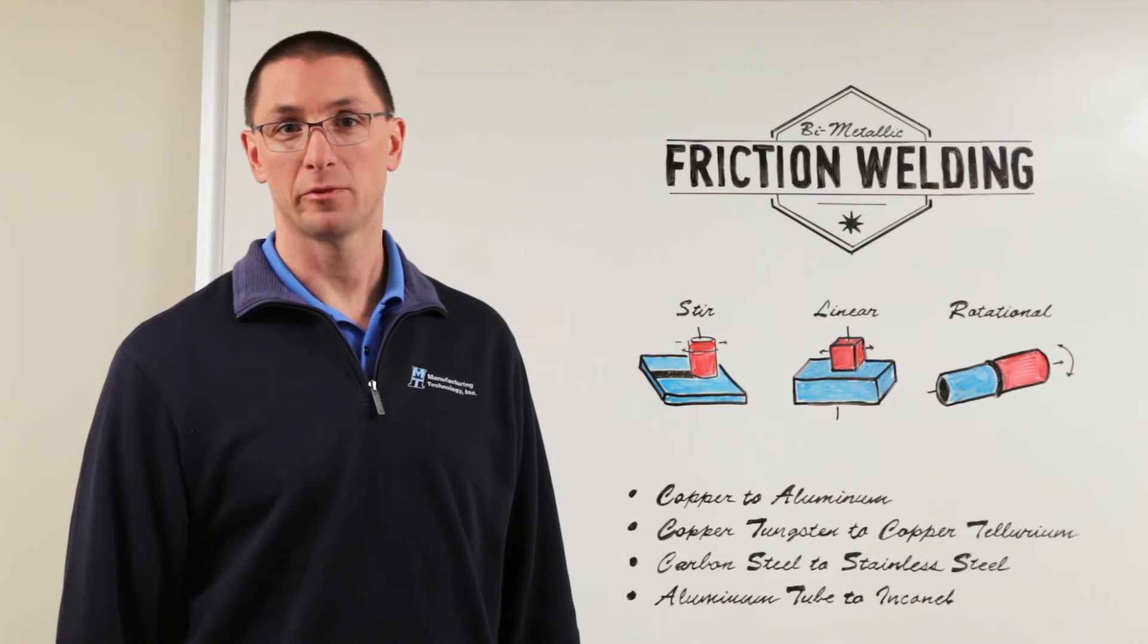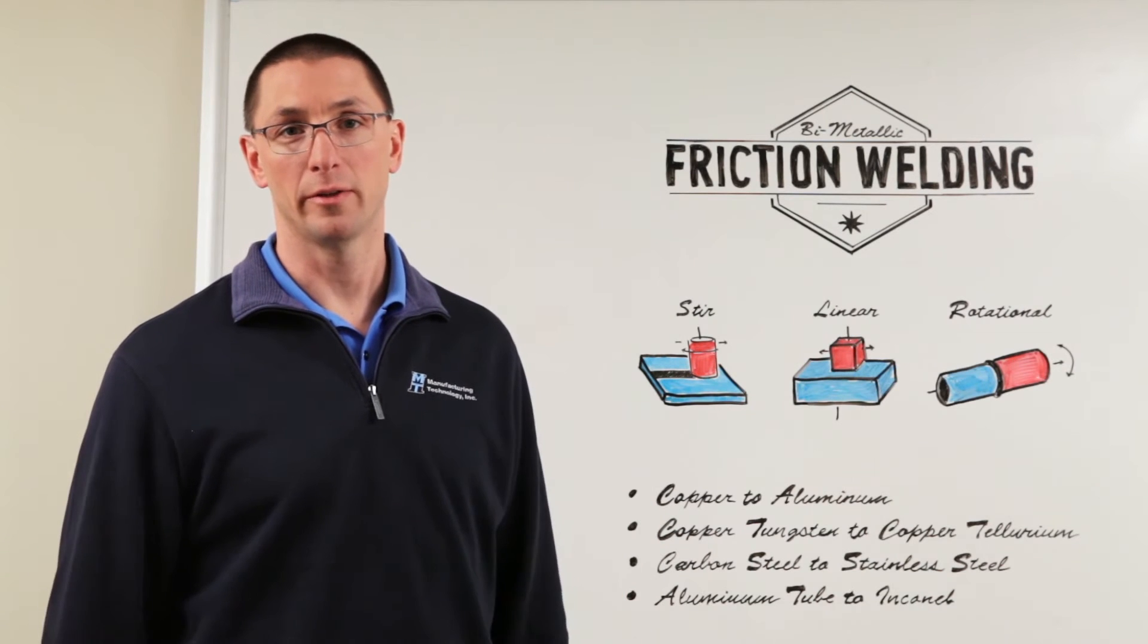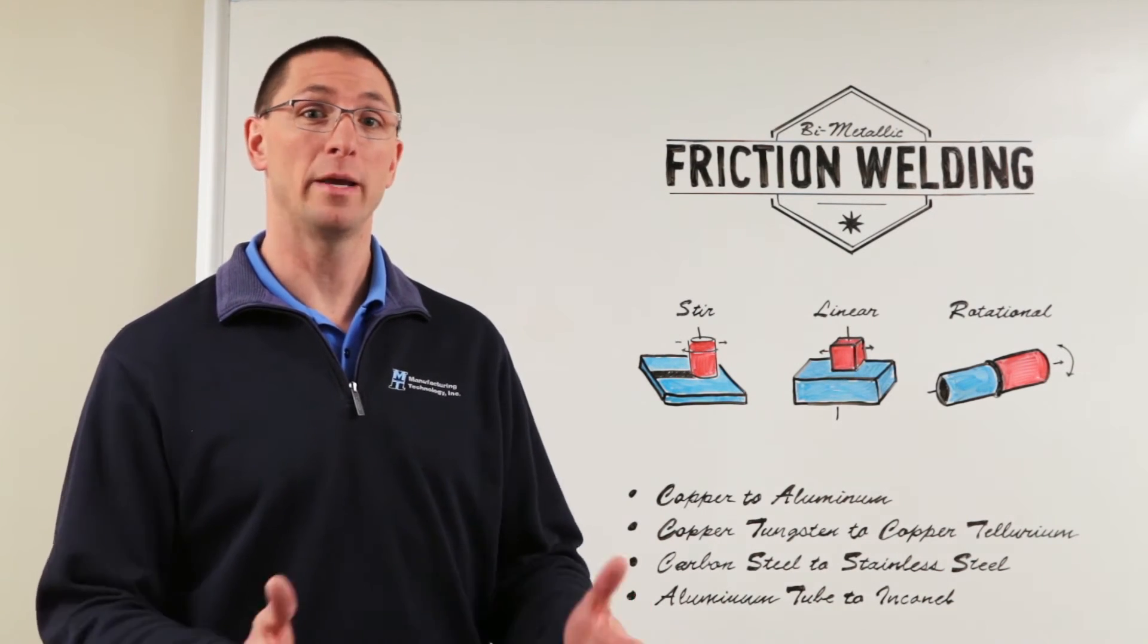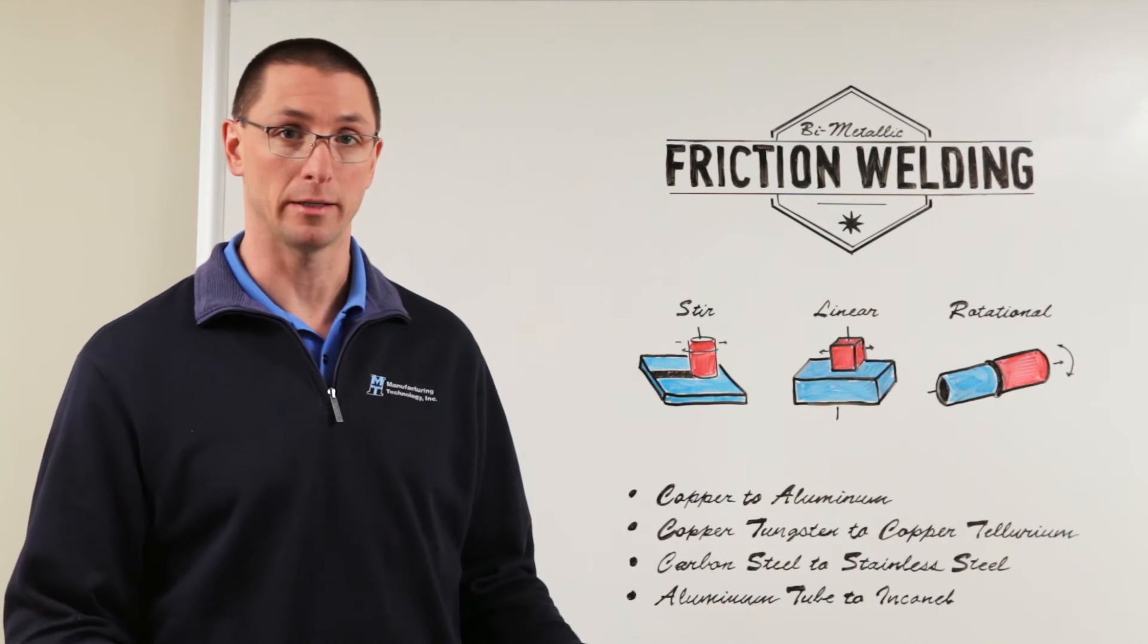Another application for welding bimetallics would be transition joints for rockets where it's absolutely critical that you need a leak-proof joint between two different materials. Instead of making a mechanical joint you can use friction welding, even for materials like aluminum and Inconel.